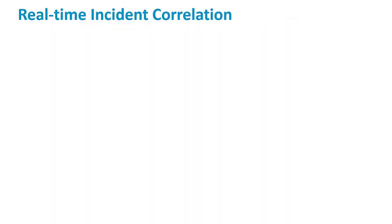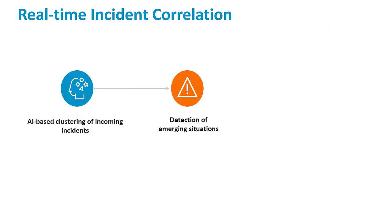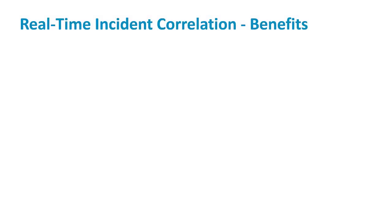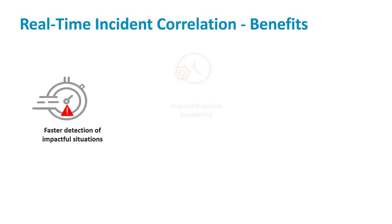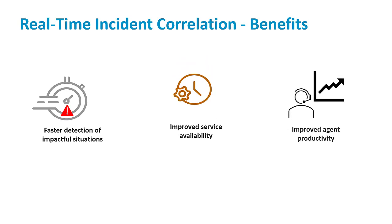Real-time incident clustering enables incident managers to identify clusters of incoming incidents that might indicate an emerging high-impact situation. Real-time incident correlation helps in faster detection of major incidents, thus improving service availability and agent productivity.